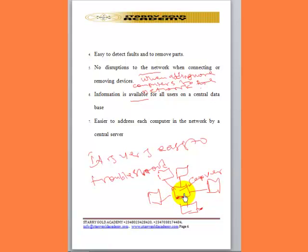It is also easier to address each computer in the network via the central server. Each computer on this network will have an ID that can easily be traced or located through the server. Whether the server wants to communicate with a particular terminal, it is very easy, simply because each computer has direct connection to the server.